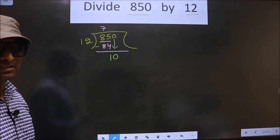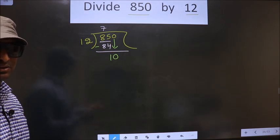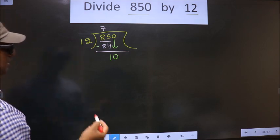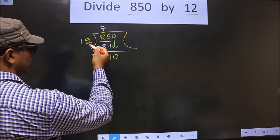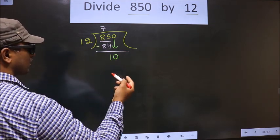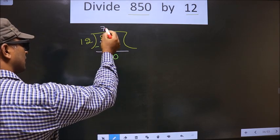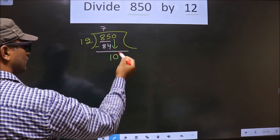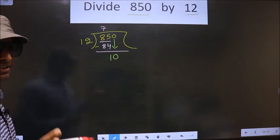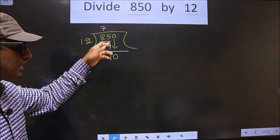And what mistake do they do? See here, 10 is smaller than 12, so what they do is they put a dot here and take 0 here, which is wrong. Just now you brought the number down.